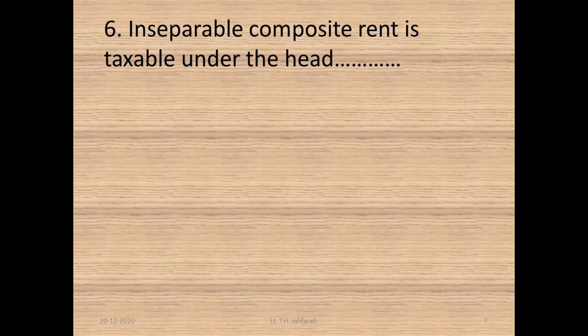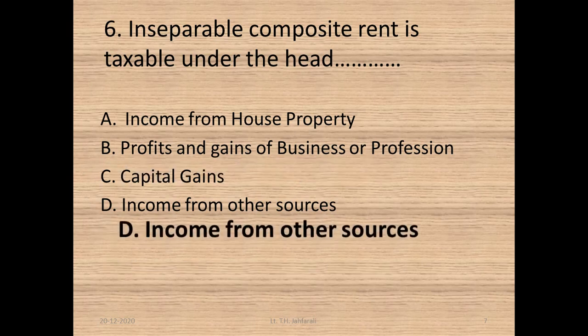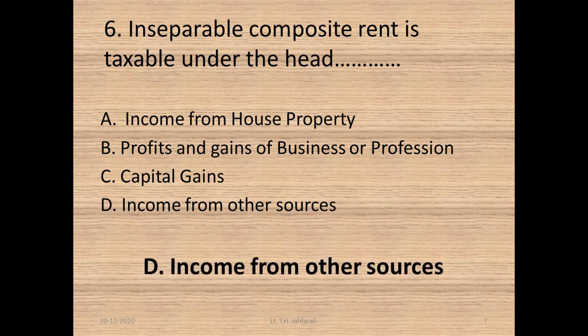Question 6: Inseparable composite rent is taxable under the head — A. Income from house property, B. Profits and gains of business or profession, C. Capital gains, D. Income from other sources. Option D: Income from other sources.